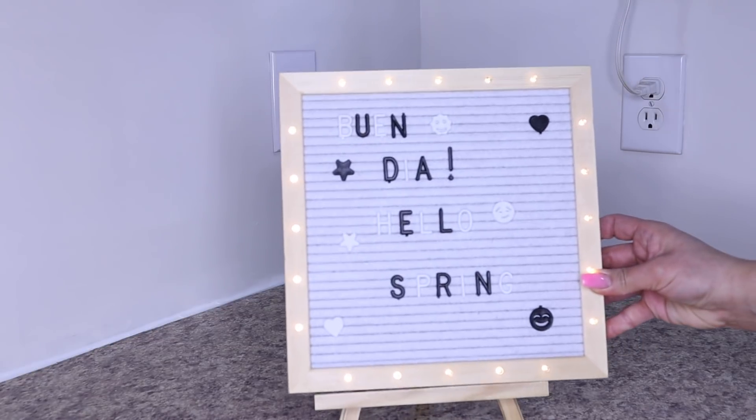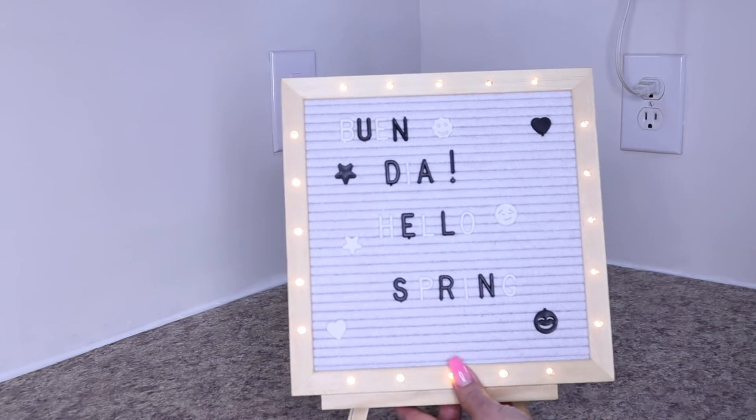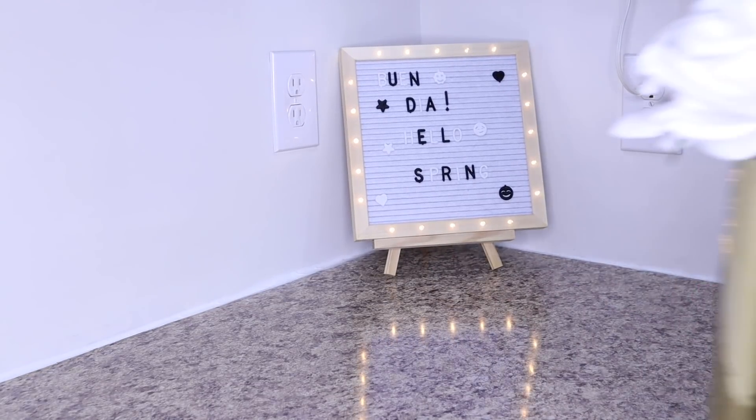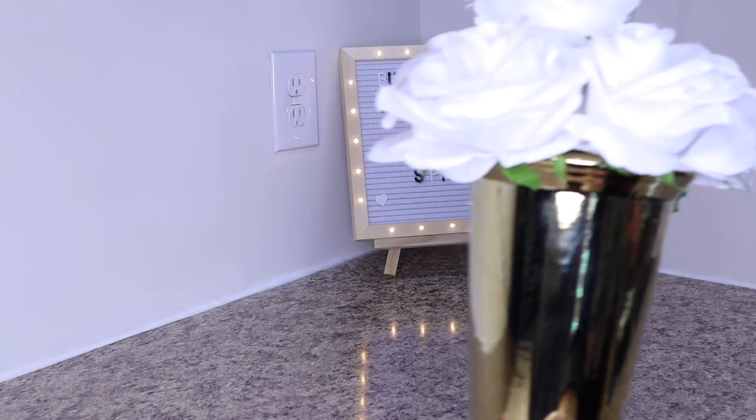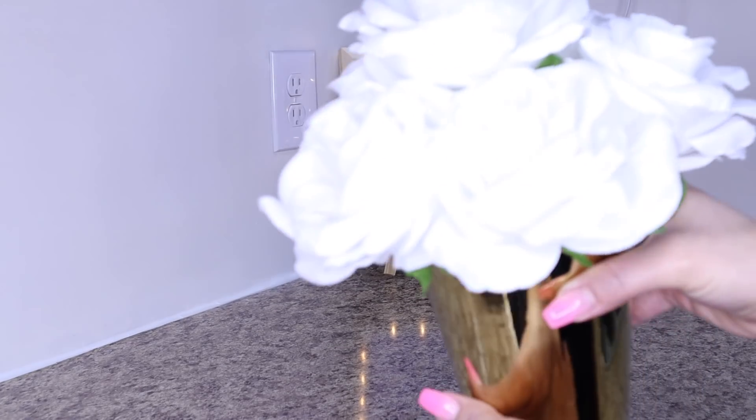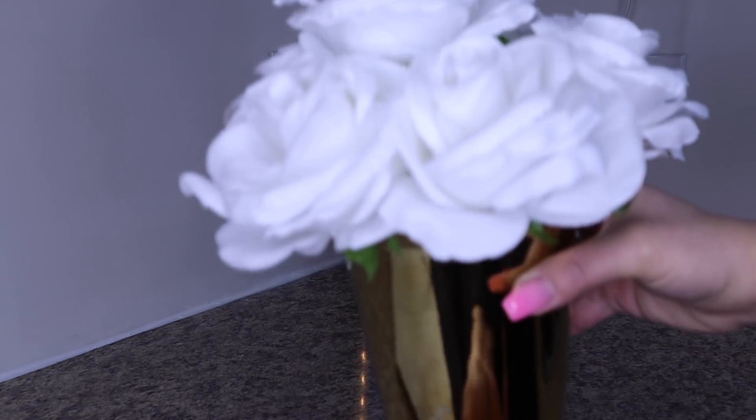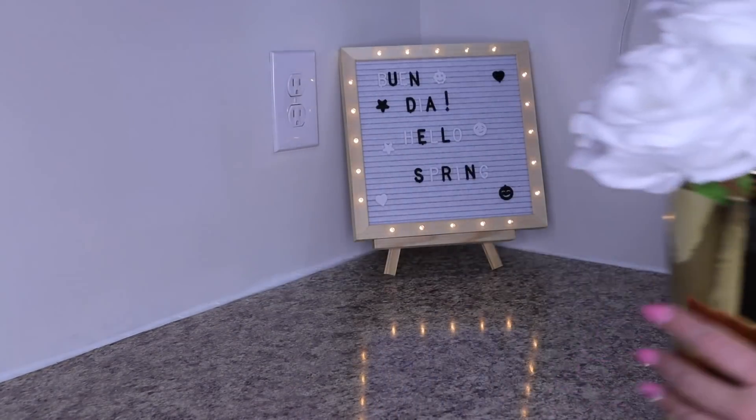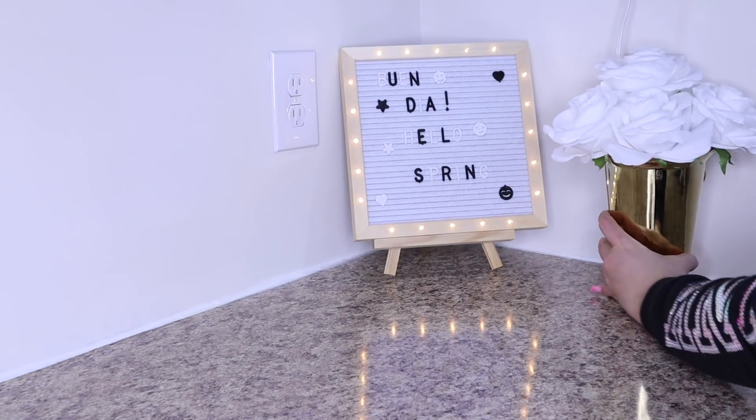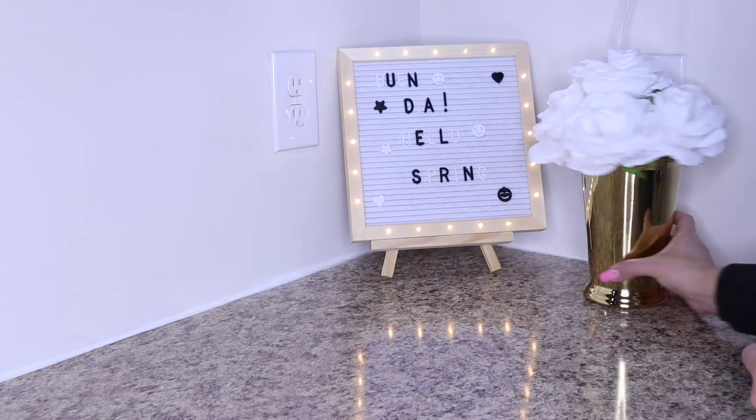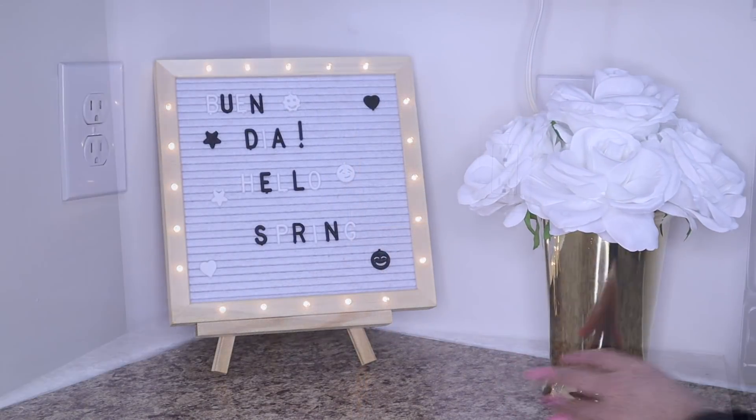Now moving to this corner, which is where I usually put my coffee station. I'm going to place this little sign that you can get on Amazon. I'll try to leave the link in the description box. I'm also going to place this gold base with these white roses that I showed you in the shopping video. If you haven't seen it, I'll be leaving it here for you to watch and see the prices and the things I buy. I always like to make a video in case something interests you, so you know where to find it.